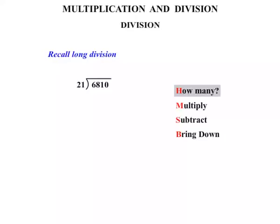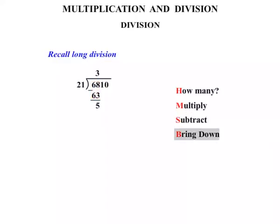We ask: how many times does 21 go into the first part, 68? That occurs 3 times. Then we multiply: 3 times 21 gives 63. Write it down. Our next step is to subtract: 68 minus 63 is 5. The final step in the loop is to bring down the next digit, in this case 1, giving us 51.